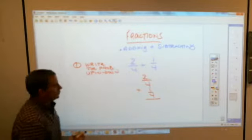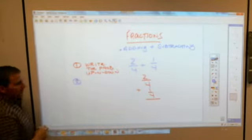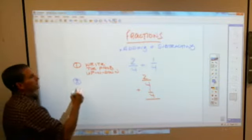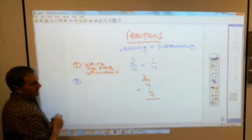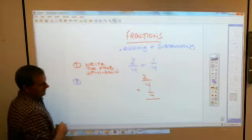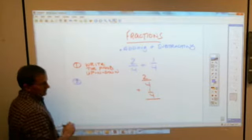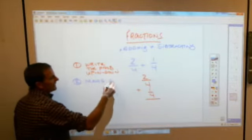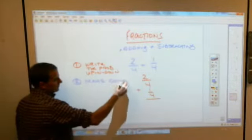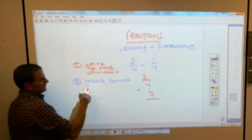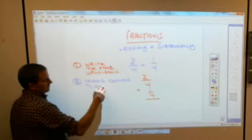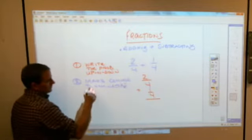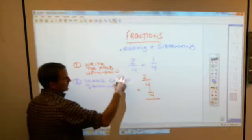Step number two, you're not going to have to do, but we're going to put it down because eventually you will. Step number two is you must, in order to add fractions together, they have to have the same bottom number. Step number two is make what we call common denominators. Common means the same.